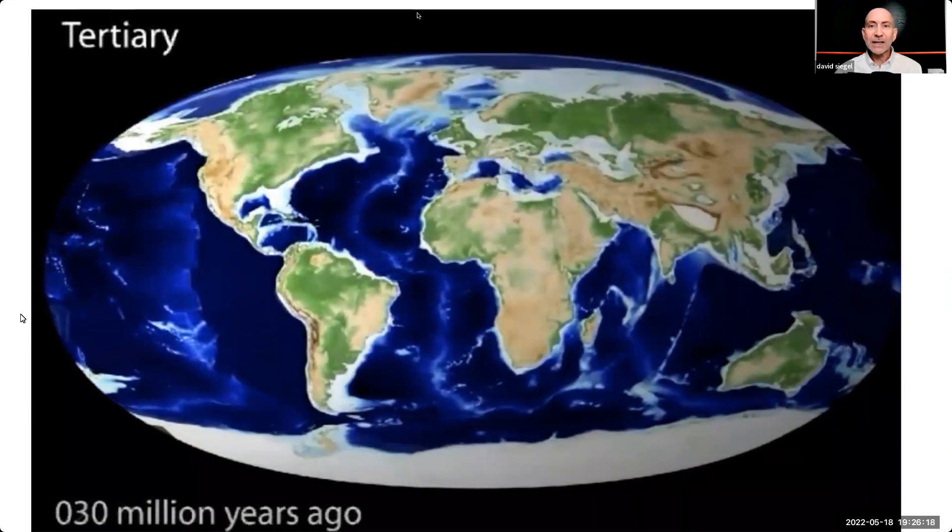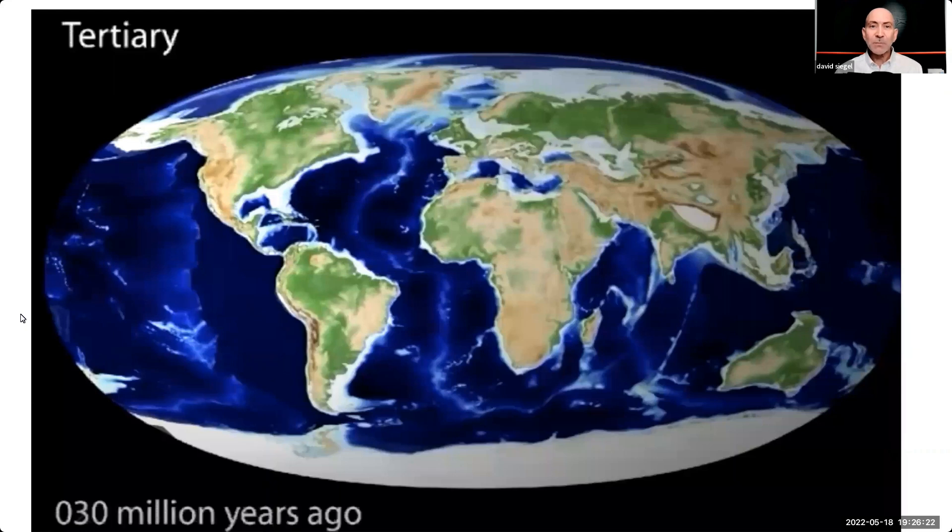30 million years later, India has smashed into Asia, creating the Himalayas, and the Isthmus of Panama has recently closed, opening the north-south channels that transport heat from the tropics to the poles. You would think this would warm the poles up, but now the heat has a path to escape, and that brings colder temperatures to the poles, so they begin to freeze.